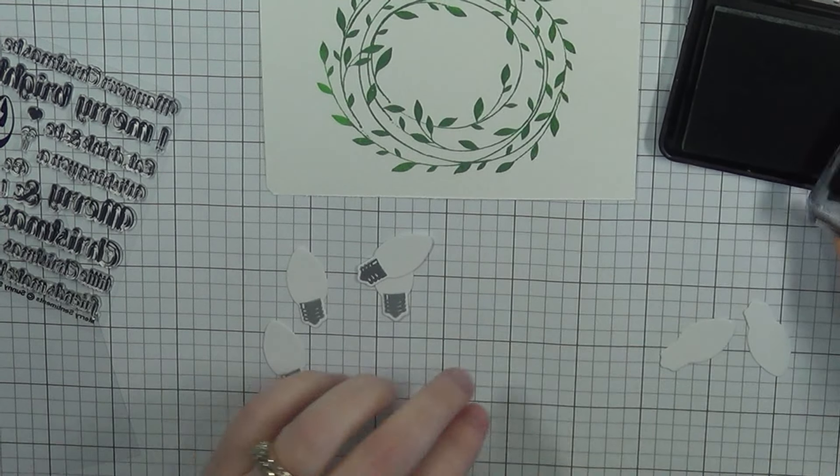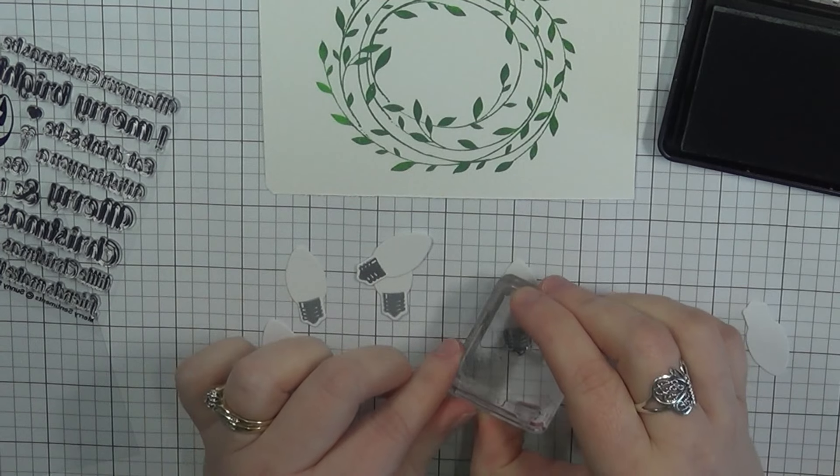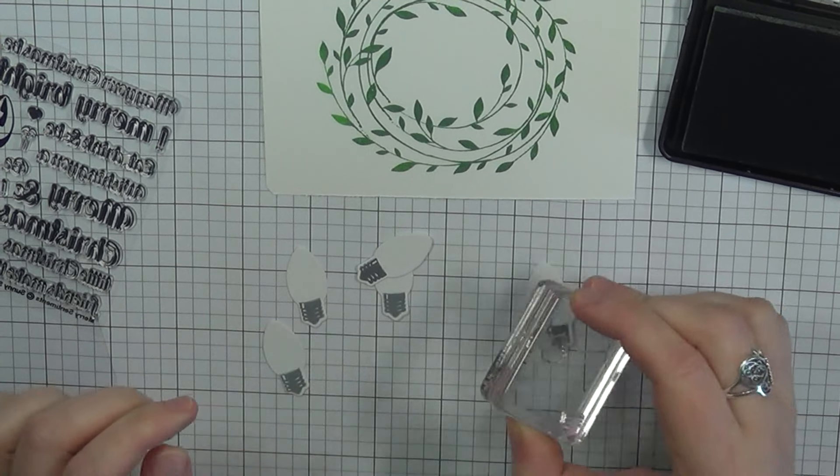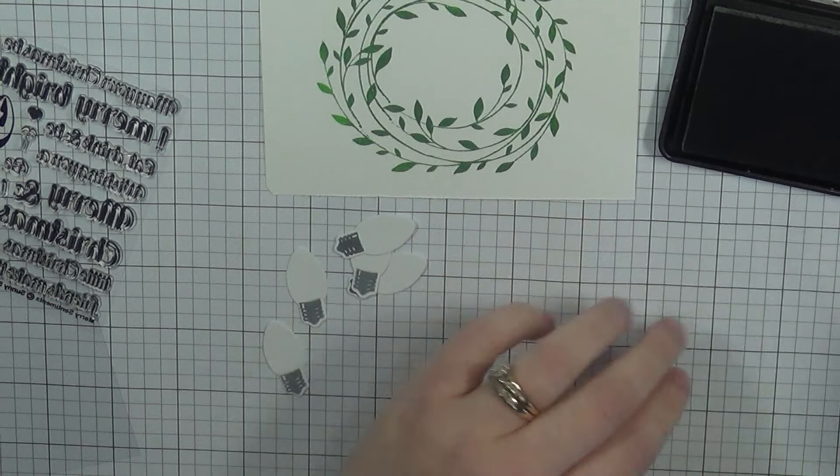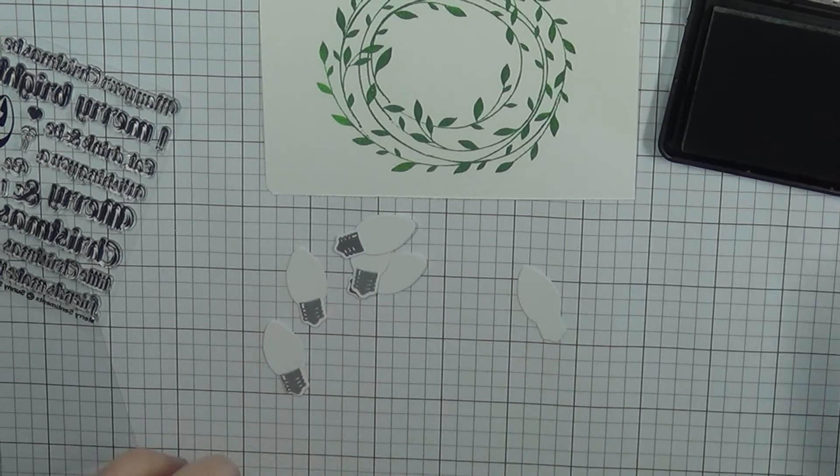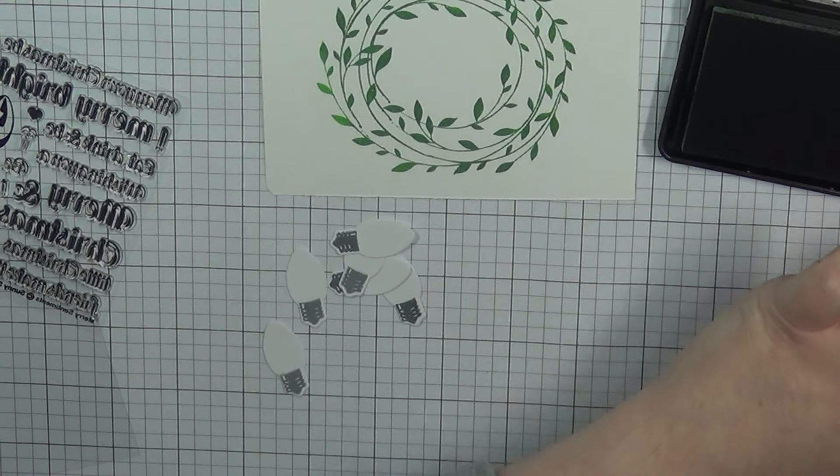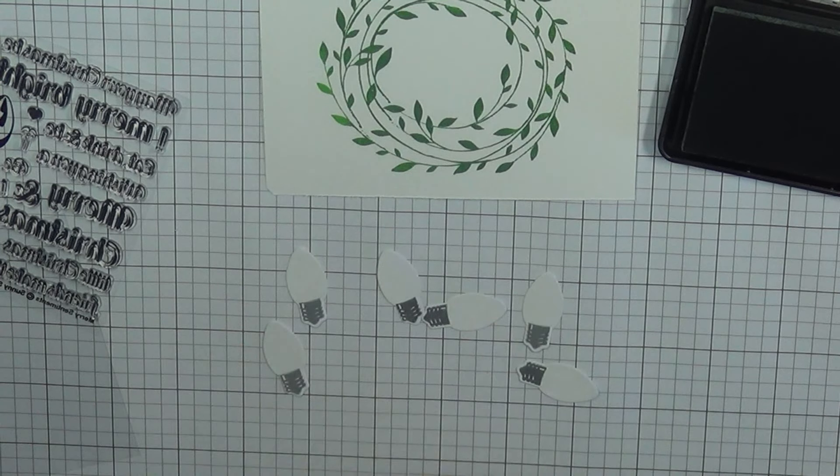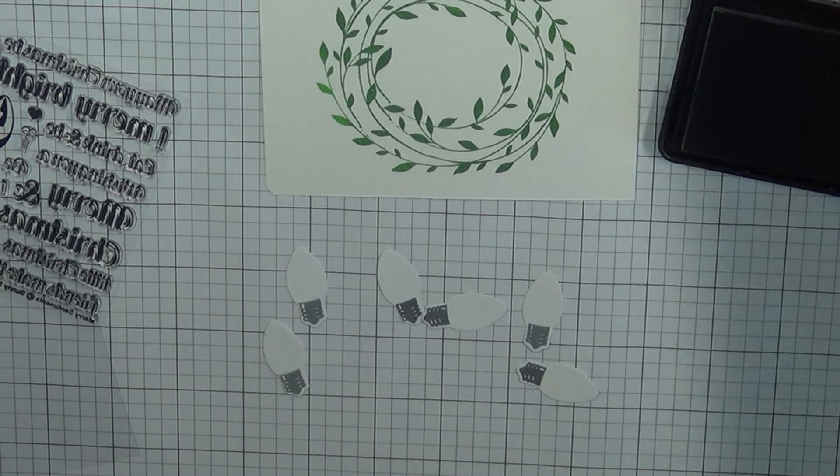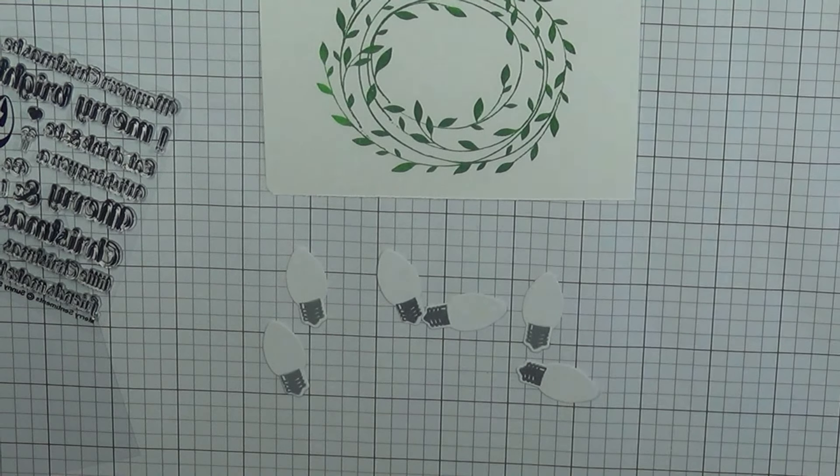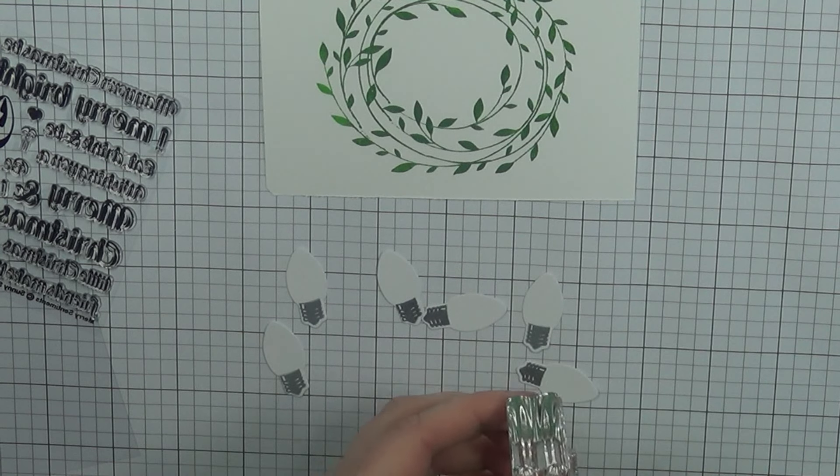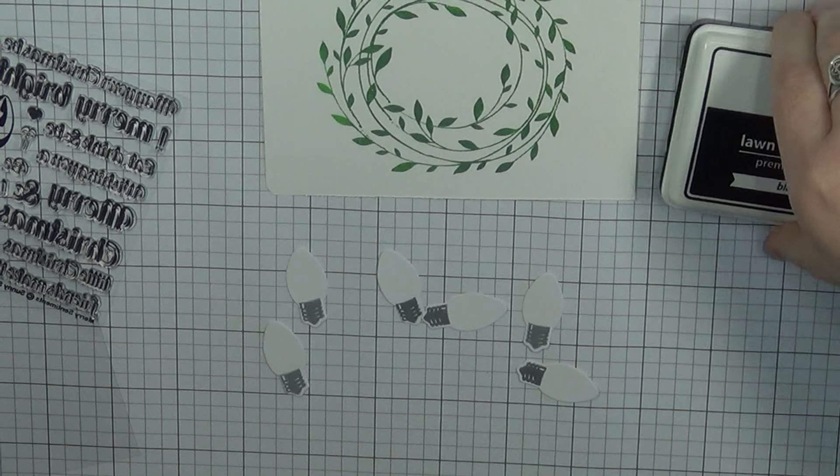So the wreath that you see there is from Hero Arts. It's called a wreath of leaves and then I'm taking this stamp set here from Sunny Studio. There is a coordinating die with this set and it is actually what they call a closed die. So it's easier for me to go ahead and die cut the die first and then stamp down the image onto the cardstock to line it up.